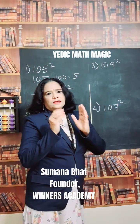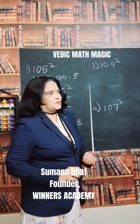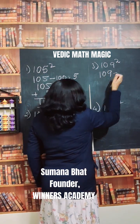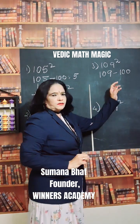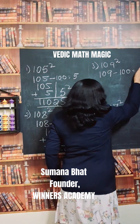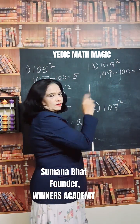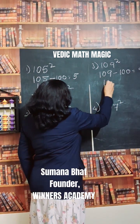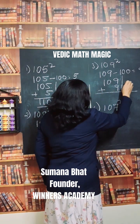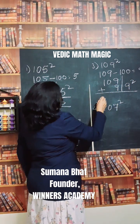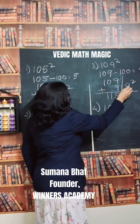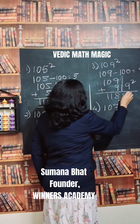Next, one hundred and nine squared. Three steps: 109 minus 100, the difference is 9. Add the difference: 109 plus 9 is 118. Square the difference: 9 squared is 81. Find the final answer in seconds and write it in the comments.